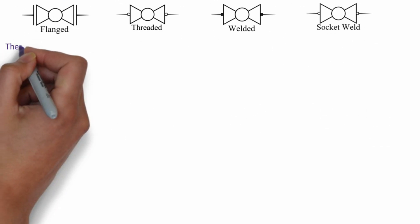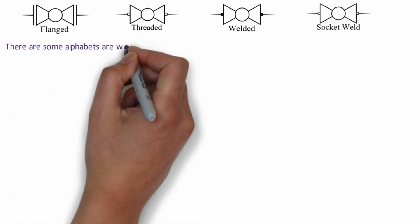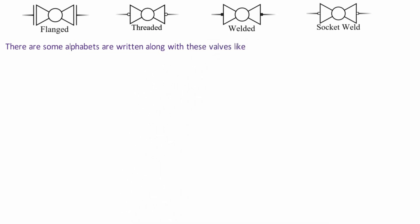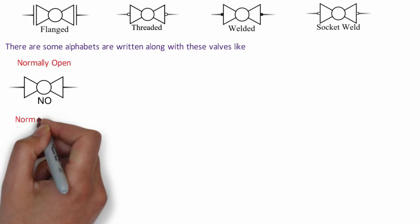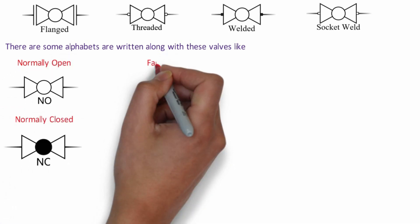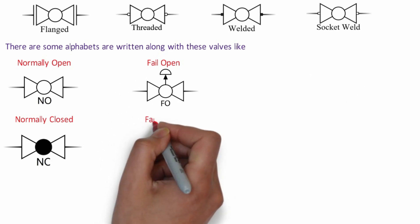Often we see some alphabets or abbreviations are written along with these valves like NO, NC, FO, FC which stands for normally open, normally close, fail open, and fail close respectively.